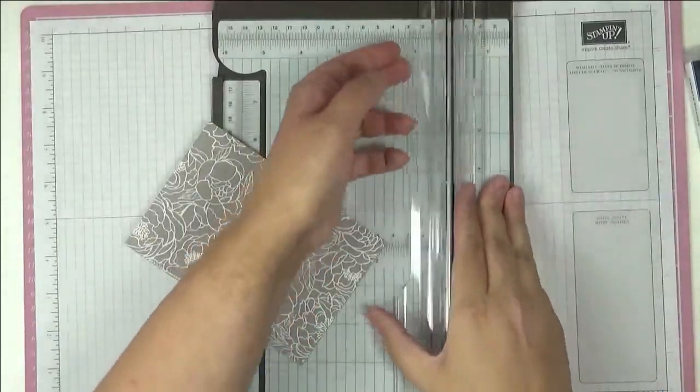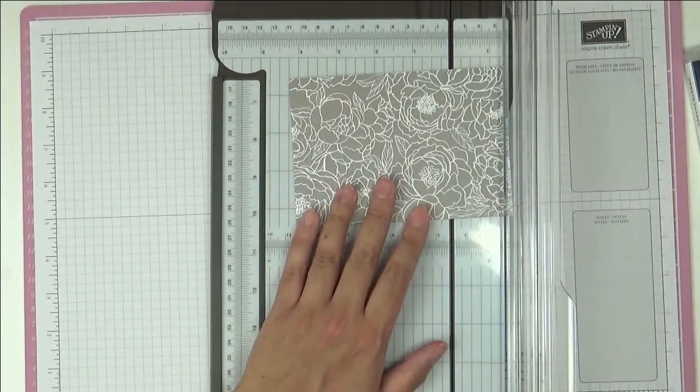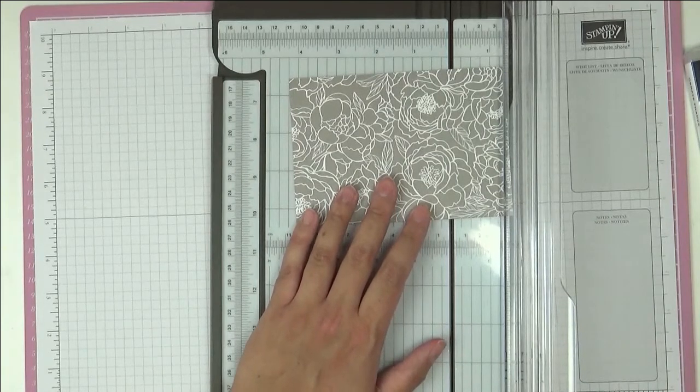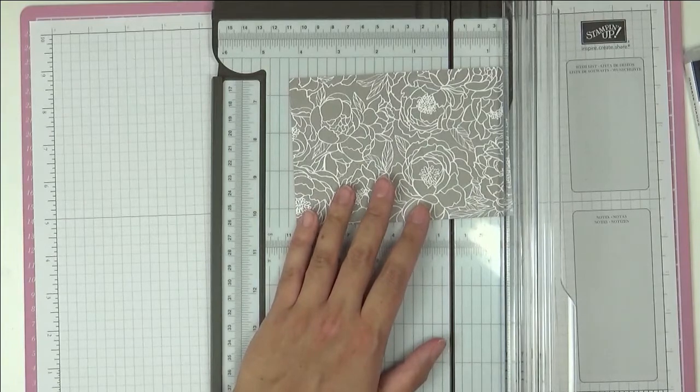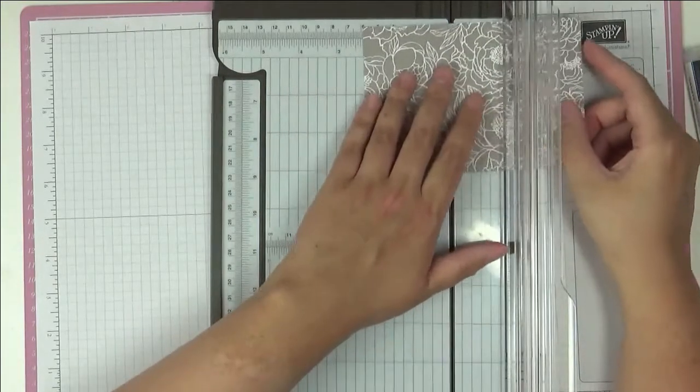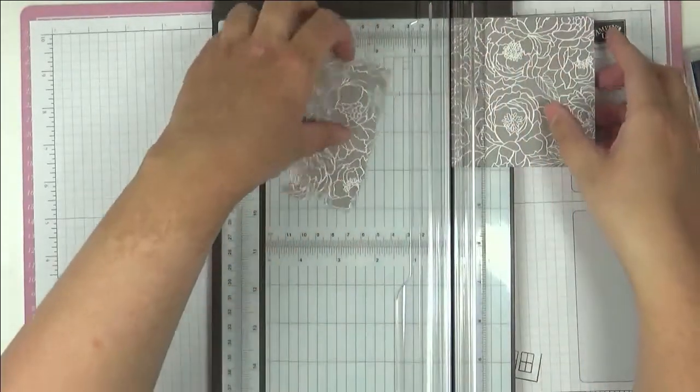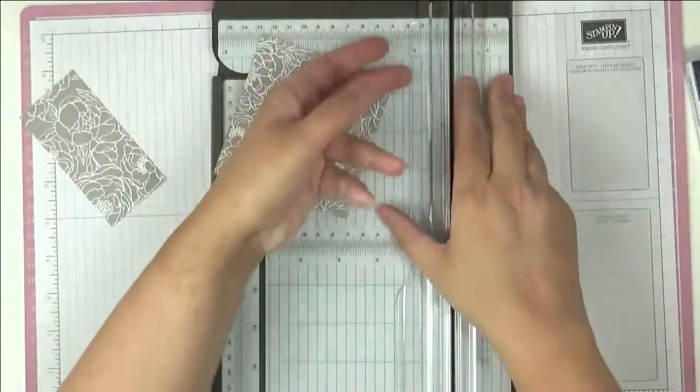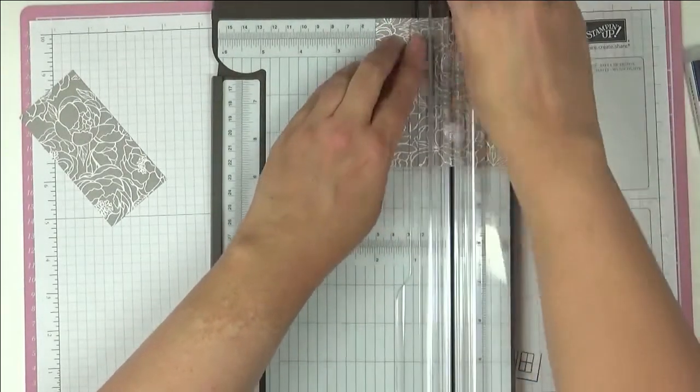Okay, so here's the paper trimmer and we just basically want to divide this into thirds. Now this piece actually measures 14.35 centimeters so I'm going to actually just divide it into five and five. So I'm going to do five at either end, five centimeters here from the top piece. That's the top piece. Then I'm just going to twist it around and do five centimeters from the bottom as well.